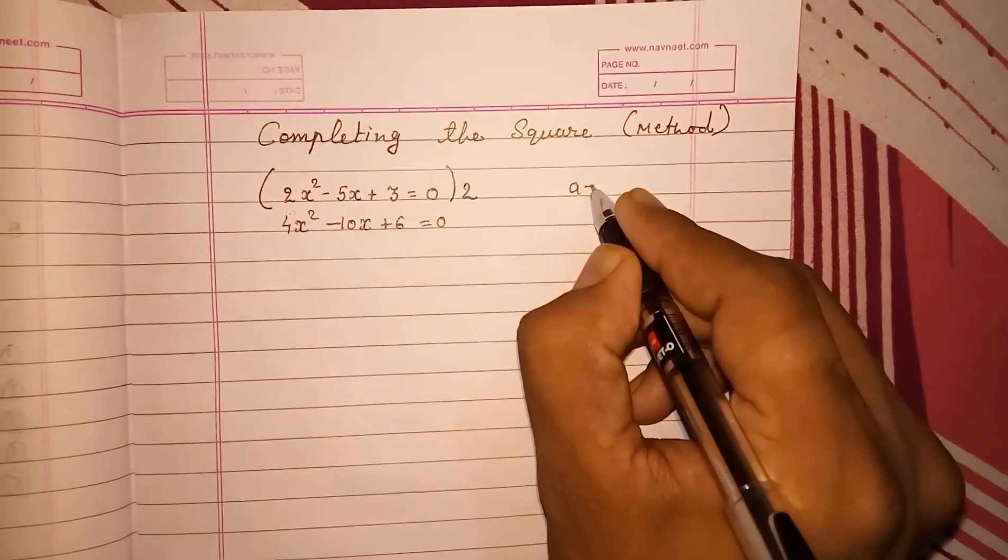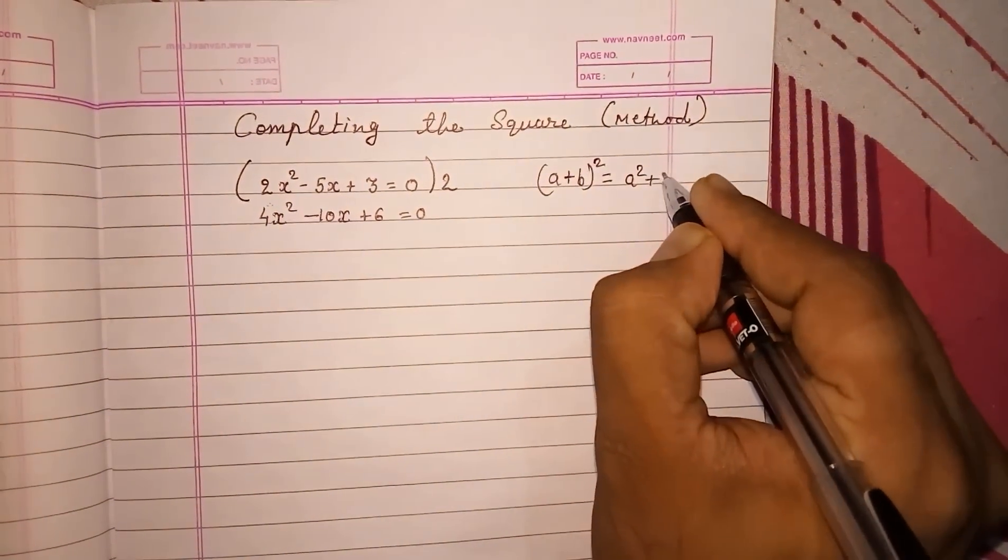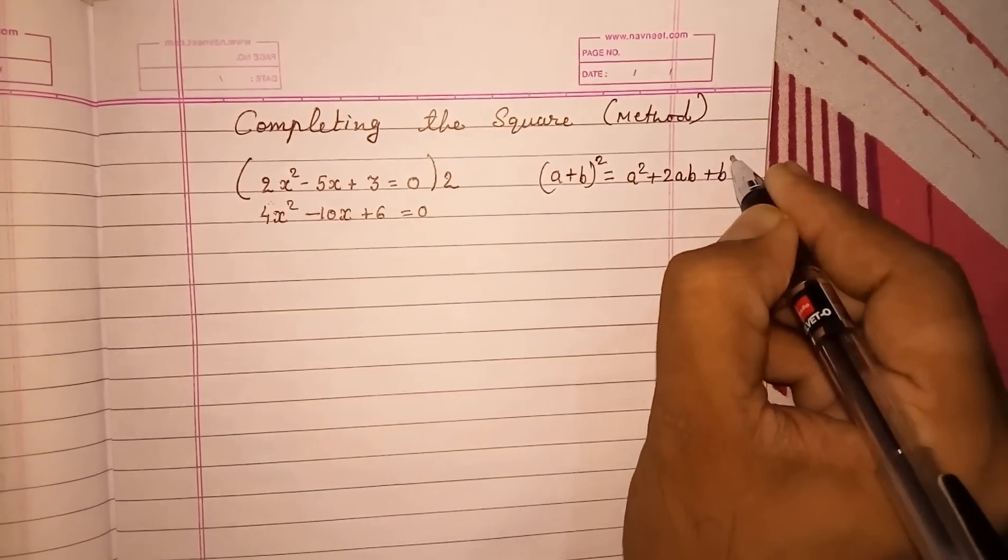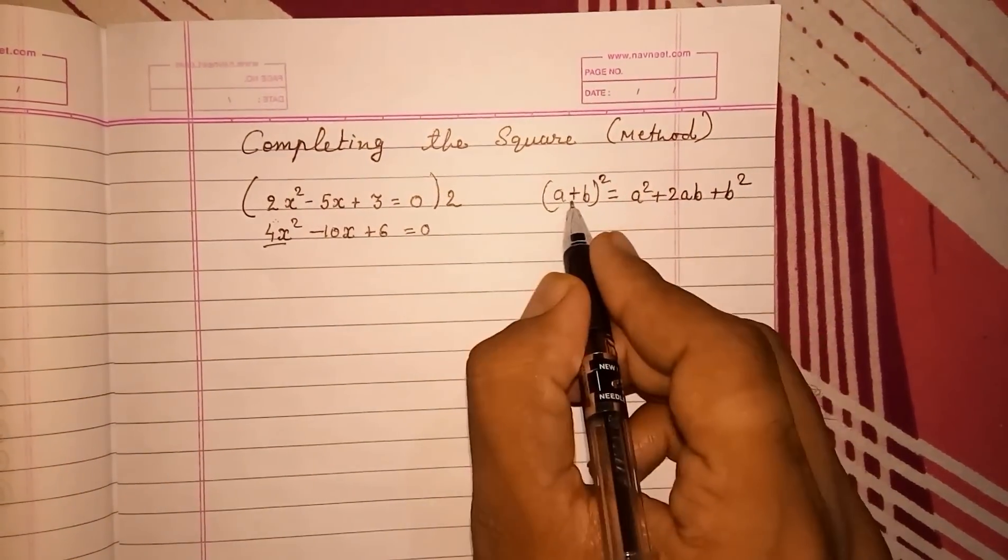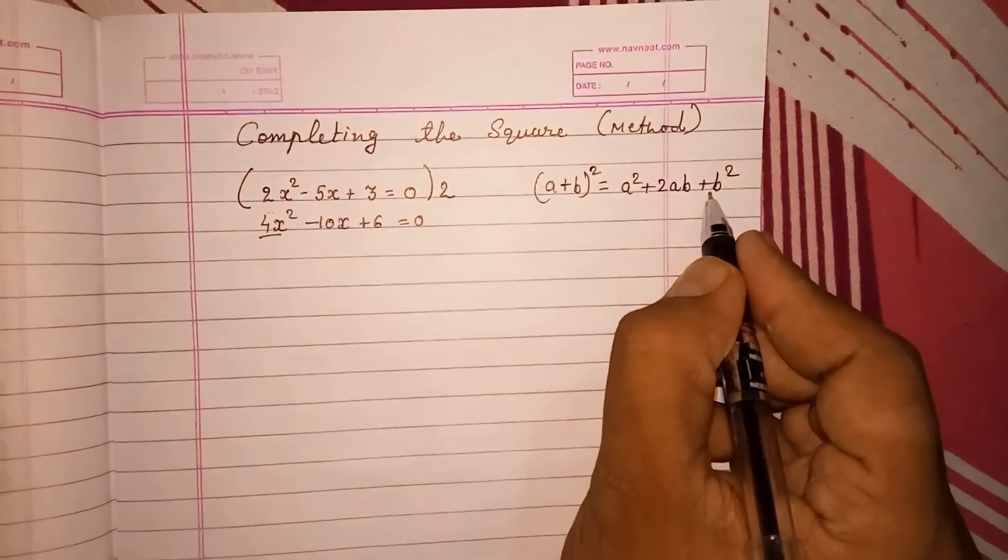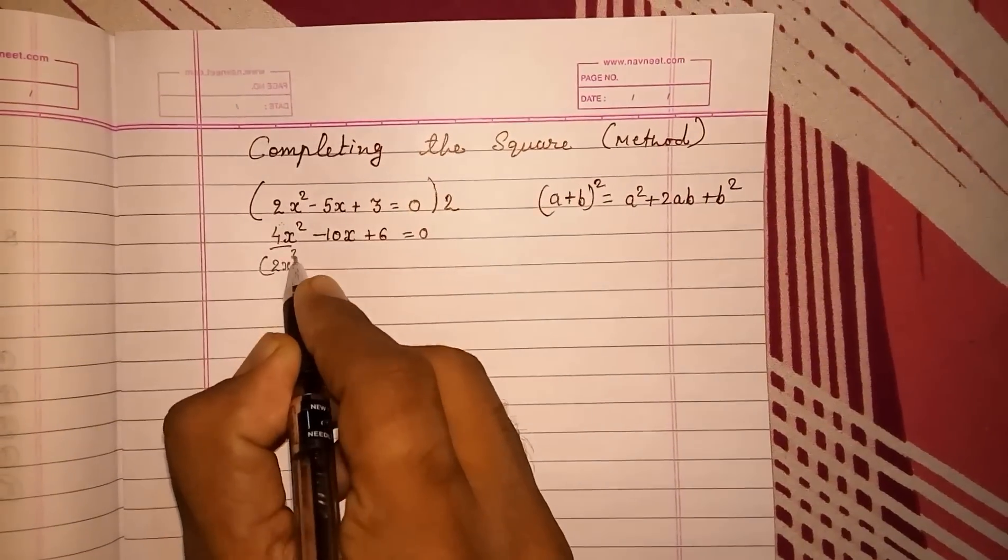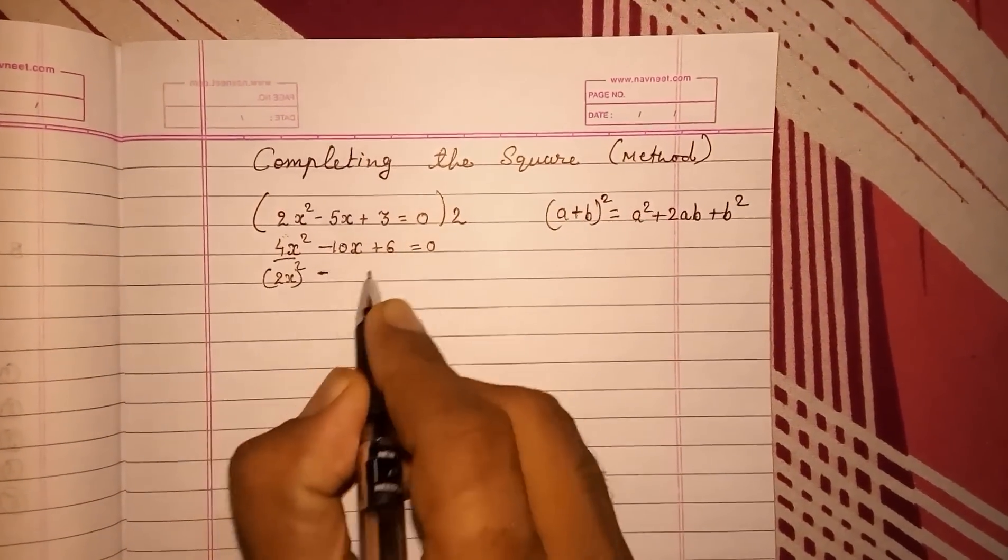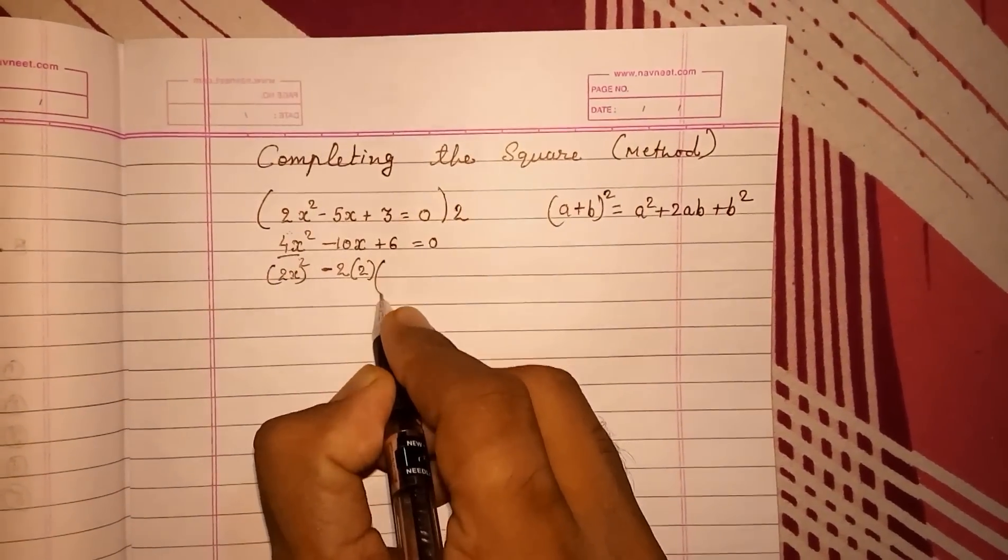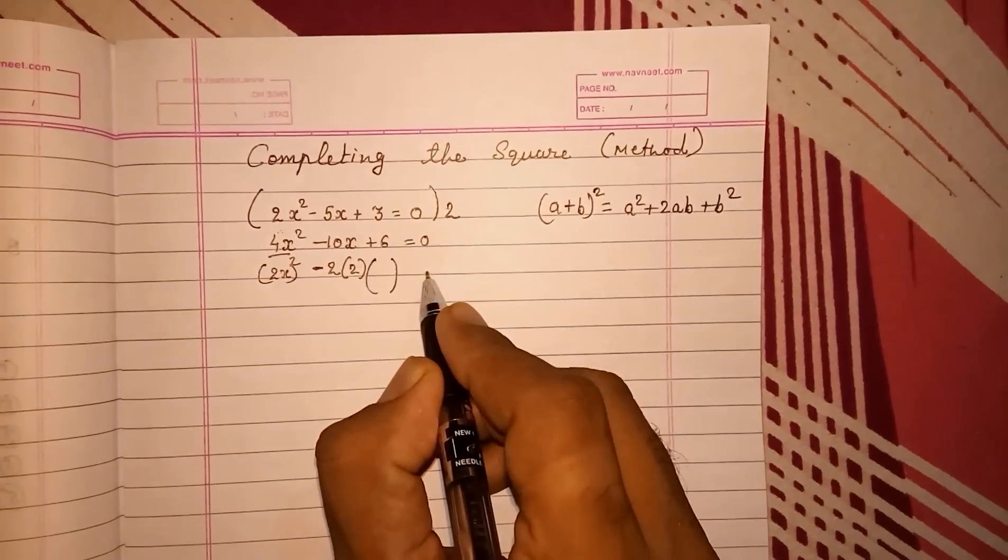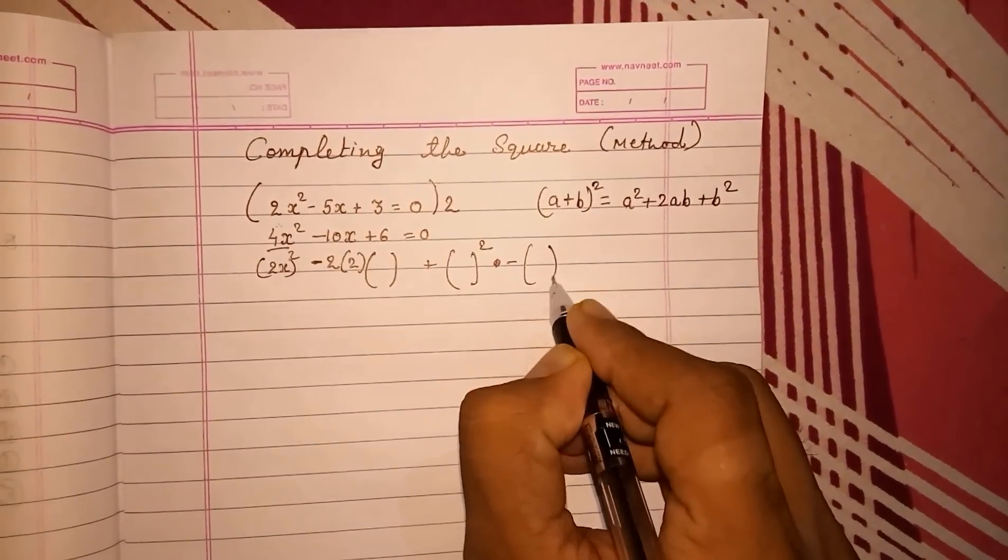We should know that a plus b whole square gives you a square plus 2ab plus b square. Here also we have to do the same thing. First we have to look at the number. We have to change these numbers into this formula. 2x whole square the first number. Then minus is here, so we will use the minus identity. Then 2, then the second number.